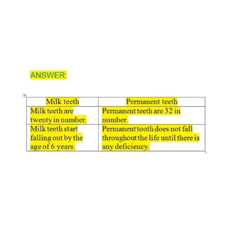Second point: milk teeth start falling out by the age of 6 years. Permanent teeth, as the word permanent means, do not fall throughout life unless there is some deficiency in a person. Write along with me.